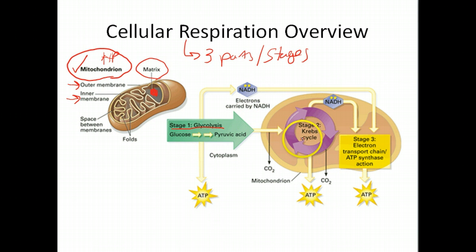Stage two is the Krebs cycle. And stage three is something that I've been referring to as oxidative phosphorylation. I'm totally fine with you calling it the electron transport chain and ATP synthase action. That actually describes the process a little better. So those three stages are what we're going to talk about. That's where we're heading.